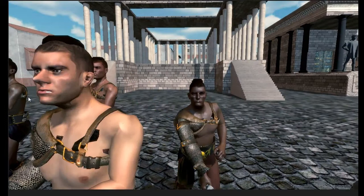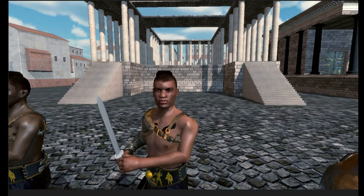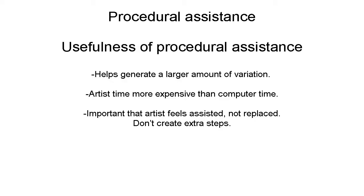This is an example of a pipeline I'm building for my gladiator game. All of these characters are a single model, and they all have some degree of variation that is generated at runtime for every character.